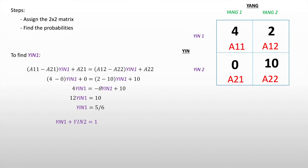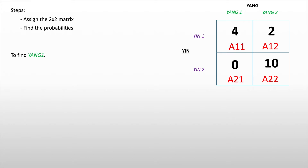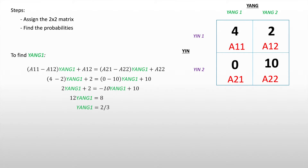The probability of choosing Yin one and the probability of choosing Yin two sum to one. Since we already have the value of Yin one, the probability of Yin two is one minus five over six, which is one over six. So Yin would use Yin one with a probability of five over six, and Yin two with a probability of one over six. We also need to find the probabilities for Yang. Using the equation for Yang one, we get two over three, so the probability that Yang would use Yang one is two over three, and the probability of using Yang two is one minus two over three, which is one third.